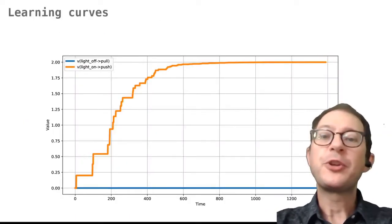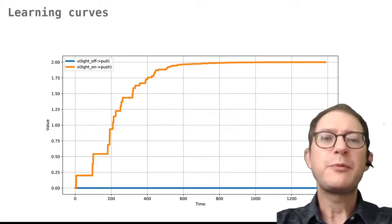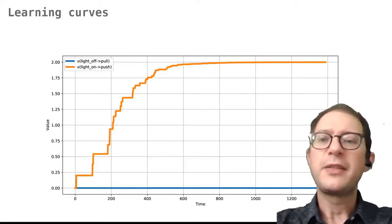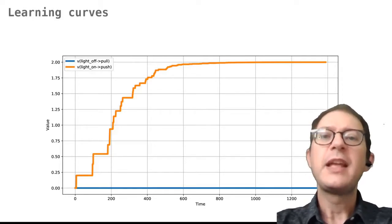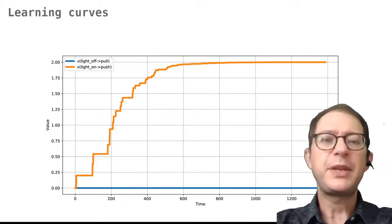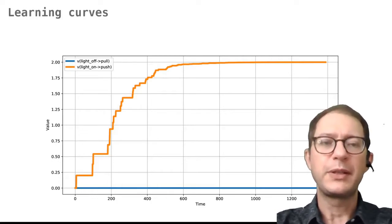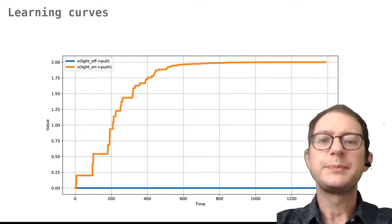Let's look at some learning curves now. Because we have a sequence of two actions, we will have one curve about learning the first action — graphing its associative strength — and another curve about the second action. The curves in the pictures are not real data but computer simulations of our learning models to show how they work.